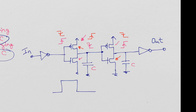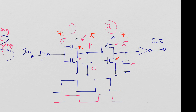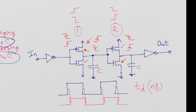If the input looks like a clean digital waveform, the output will look the same but with a delay. That delay will be almost equal for both rising and falling edges because we used two delay elements that act in opposite ways: a falling edge at the first stage produces a rising edge at the second, and vice versa. So the delay TD in nanoseconds will be the same for all transitions — that's how we construct a CMOS delay cell.